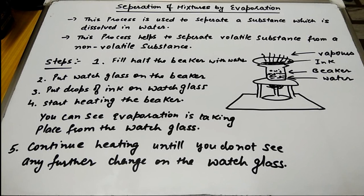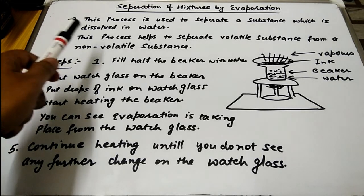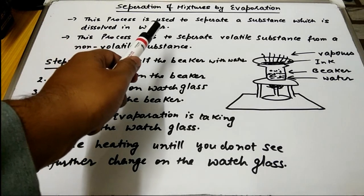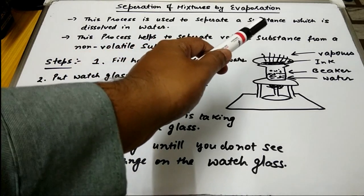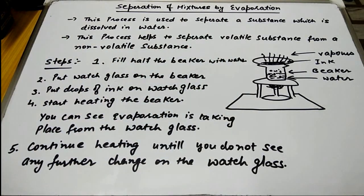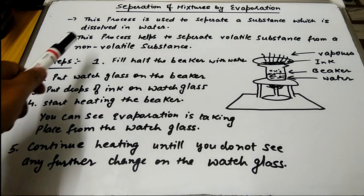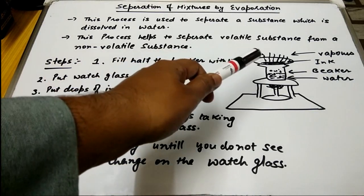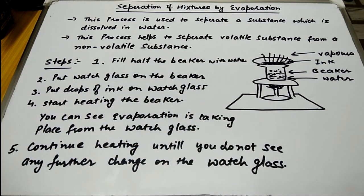Our next topic is the separation of mixtures. We are going to separate the mixture with the help of evaporation. It is a process used to separate a substance which is dissolved in water. The substance dissolved in water can be separated with the help of evaporation. This process helps to separate a volatile substance from a non-volatile substance.